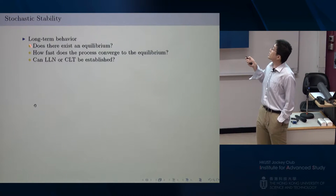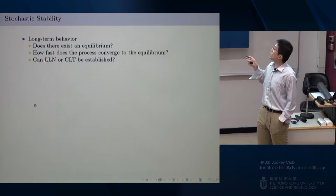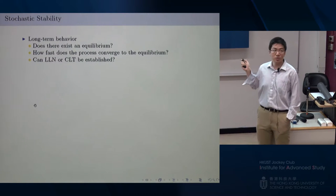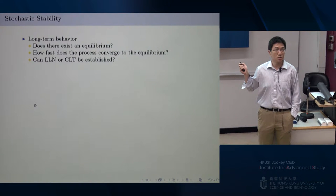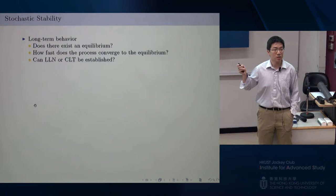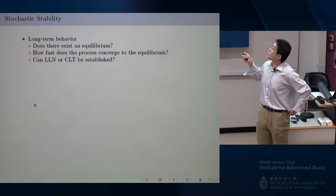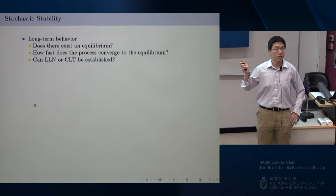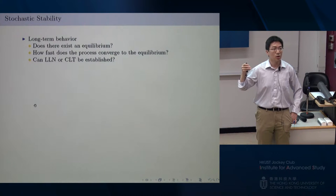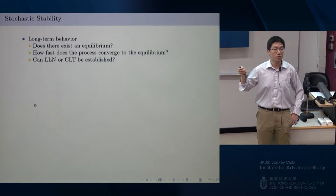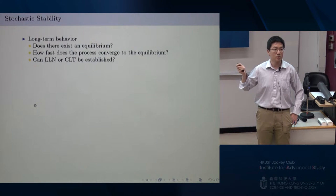The objective of this talk is to discuss stochastic stability. I'm trying to answer three questions: Does there exist an equilibrium in some sense? If it does, how fast does the process converge to this equilibrium? That's the second question.